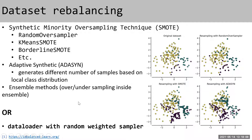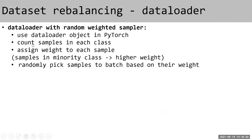In deep learning, in-sample rebalancing can be done quite easily by defining a data loader. With a data loader you load batches into the neural network and can define weights for each sample. In a binary or multi-class classifier, you count samples per class, assign weights, and then randomly pick samples for each batch based on their weight. This way you have less chance of overfitting and use the whole dataset, compared to fixed oversampling or undersampling.